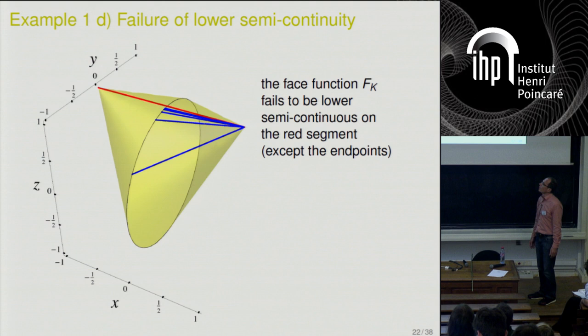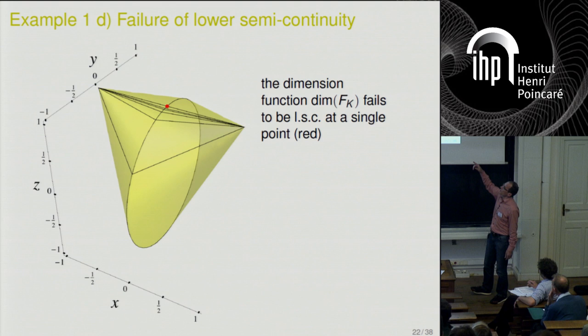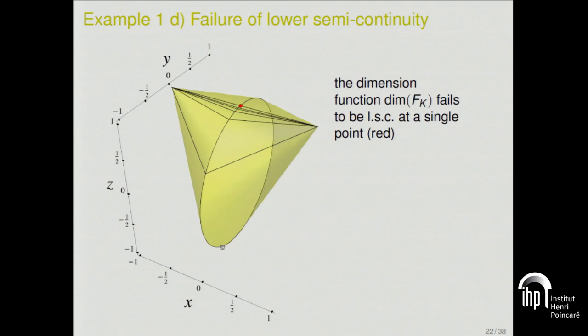In the example where it does not hold: if we take a sequence of midpoints of the blue lines, they converge to a point on the red line, but the phases of those points will never meet the left part of the red line — they cannot touch an open set there, so the phase function is definitely not lower semi-continuous. As we can see from the dimension function, there is a sequence of extreme points along the circle converging to the red point, where the dimension of the phase function jumps to one because that point lies on a segment.